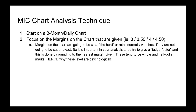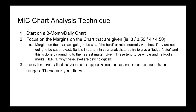On the right axis that are given, these margins on the chart are what the herd or retail normally watches. They're not going to be super exact — retail is not going to be super exact. It's important in your analysis to try to give what we call a fudge factor, and this is done by rounding to the nearest margin given. These tend to be whole and half dollar marks, hence why the levels are psychological. Step three, look for the levels that have clear support and resistance and also the most consolidated ranges.